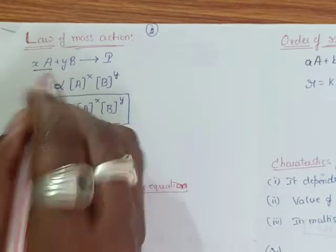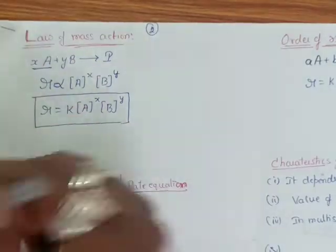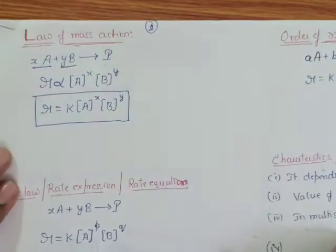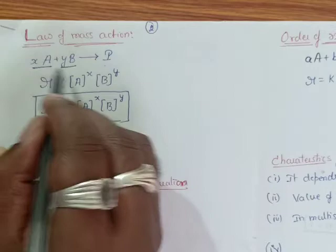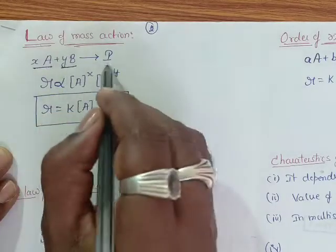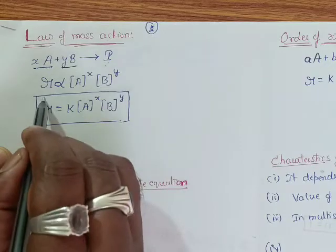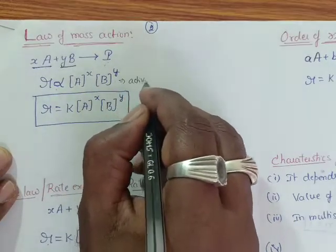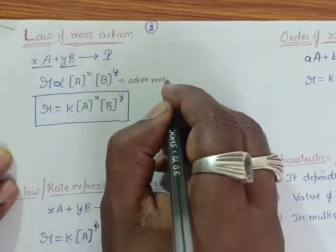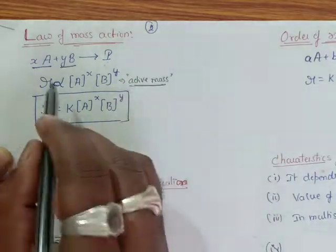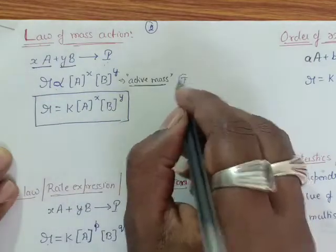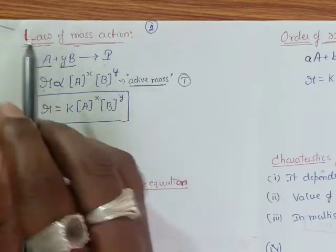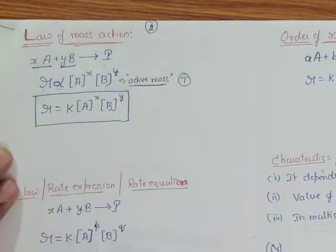Consider a reaction in which X moles of A combines with Y moles of B to form products. We know that the rate always depends upon the concentration of A and B, but not upon the concentration of the product. Therefore, the rate expression can be written as: rate is directly proportional to the active mass of the reactant molecules. According to the law of mass action, at a particular temperature, the rate of reaction is directly proportional to the active masses of the reactant molecules.